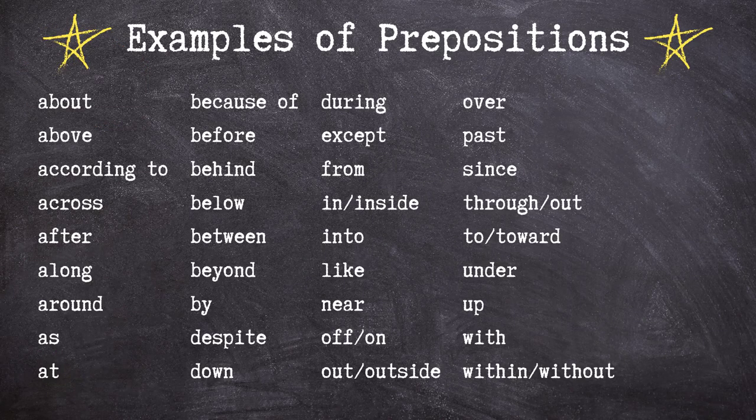Prepositions can be one of those parts of speech that sounds familiar but are easy to forget exactly what they are and do. So let's start with this list of the most commonly used prepositions to refresh our memory. In many elementary school classrooms in the US, prepositions of place are often taught using examples such as things that can be done to a tree or a doghouse.